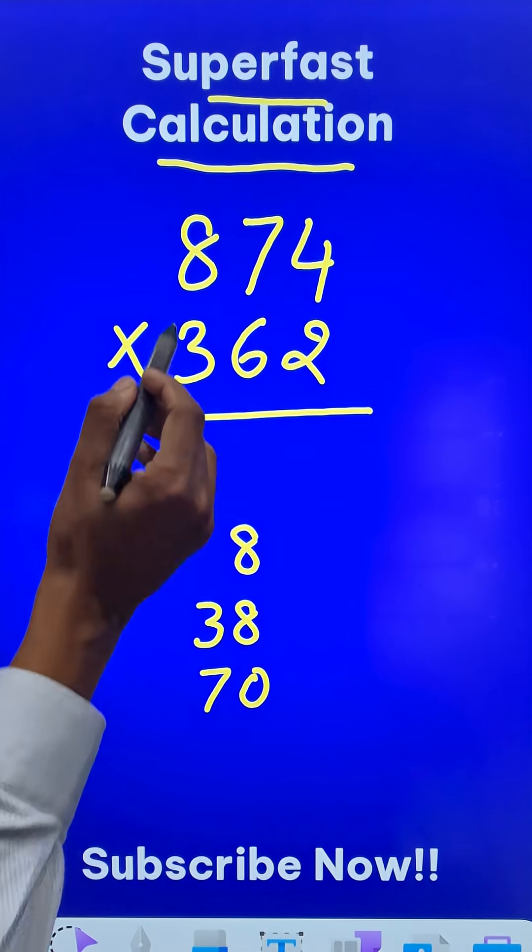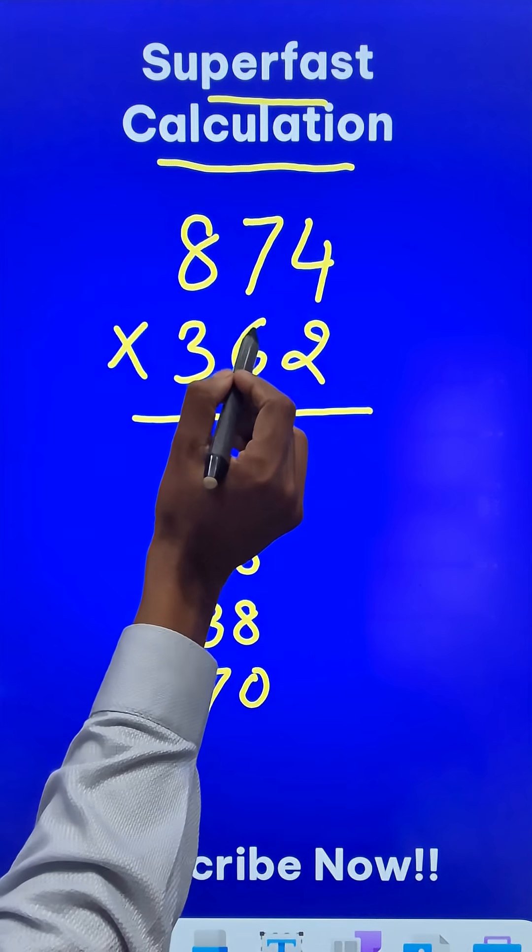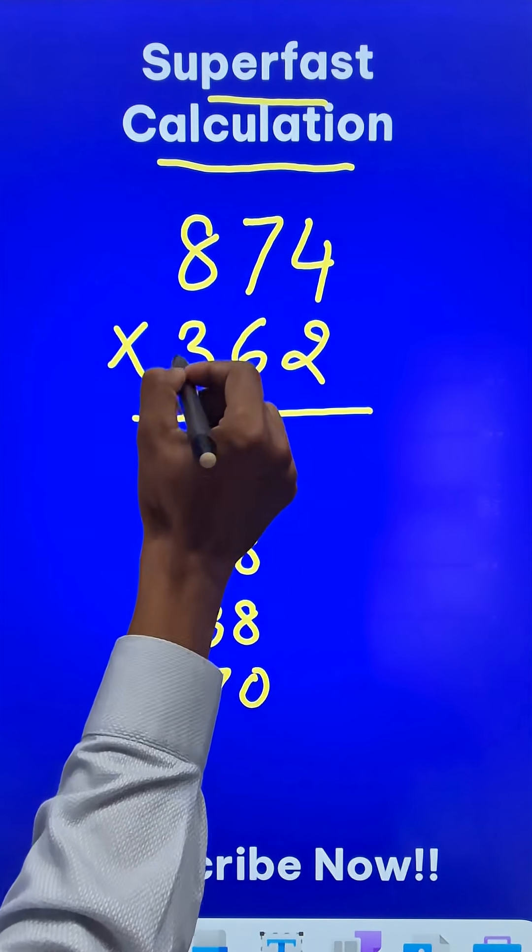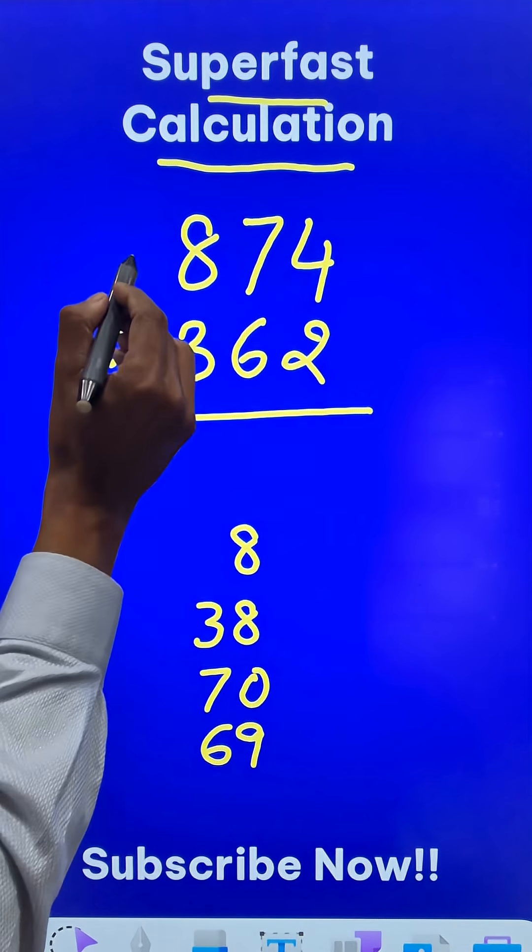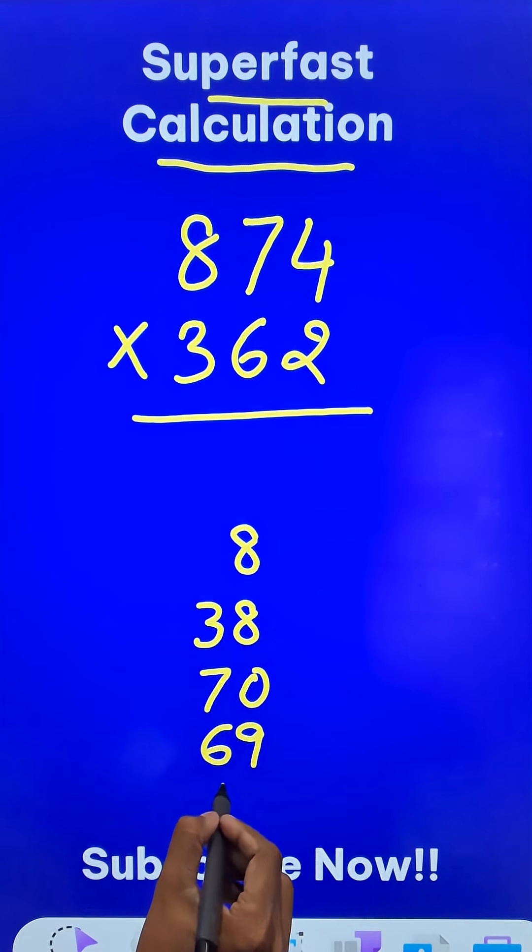Write 70. Then the first two pairs: 8 times 6 is 48, and 7 times 3 is 21. Add the two, you get 69. Finally, the first two digits: 8 times 3 is 24.